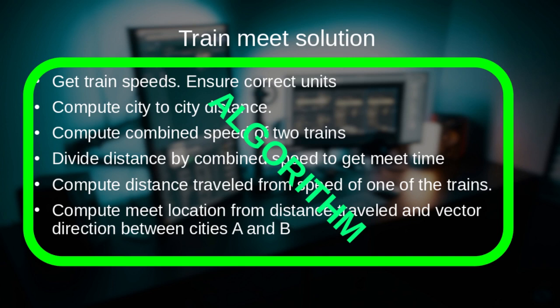What we have described is suitable for a human to solve, because humans know how to get the velocity of a train from text information given as input. Humans understand how to compute the distance between cities. If we have coordinates for the cities as input, then the human would know that you need to take a Euclidean distance between towns, or sum up the length of track segments between these cities.